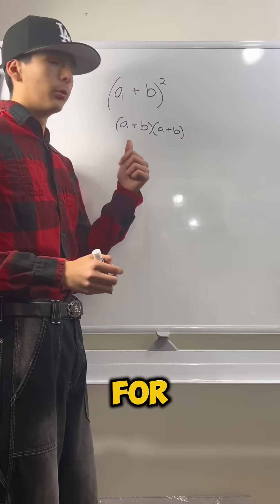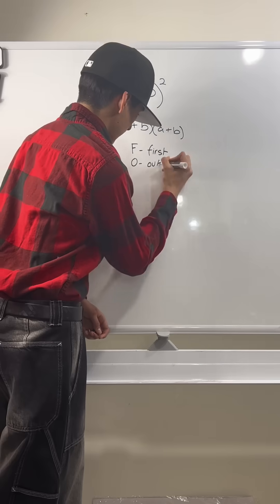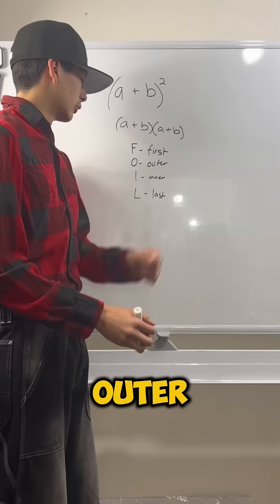Now, we have a special process for multiplying binomials like this out and it's called FOIL, which stands for First, Inner, Outer, Last.